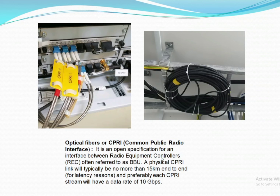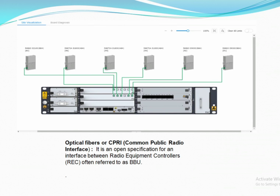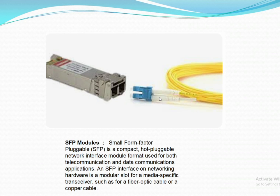The BBU uses CPRI or fiber optic cable to provide connectivity to the capacity card, which is then connected to the RRU. The RRU is connected to the capacity card via fiber optic cables with SFP modules on both sides. The SFP module converts light signals into electrical signals and electrical signals into light signals, enabling data communication in cell sites and data centers.